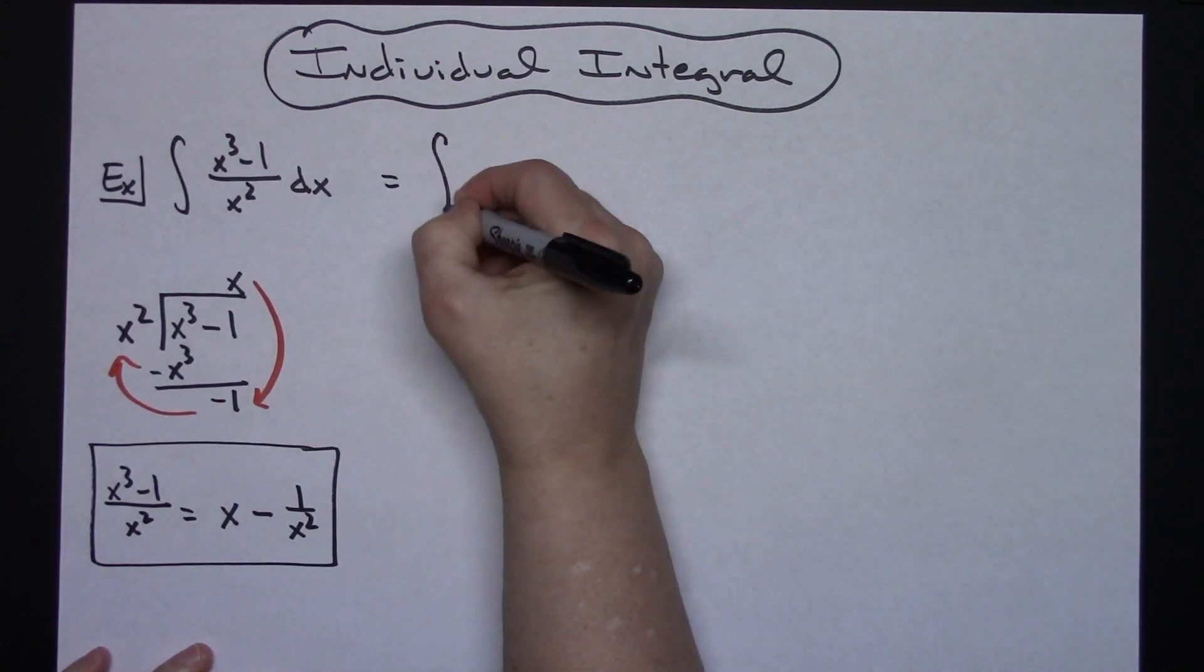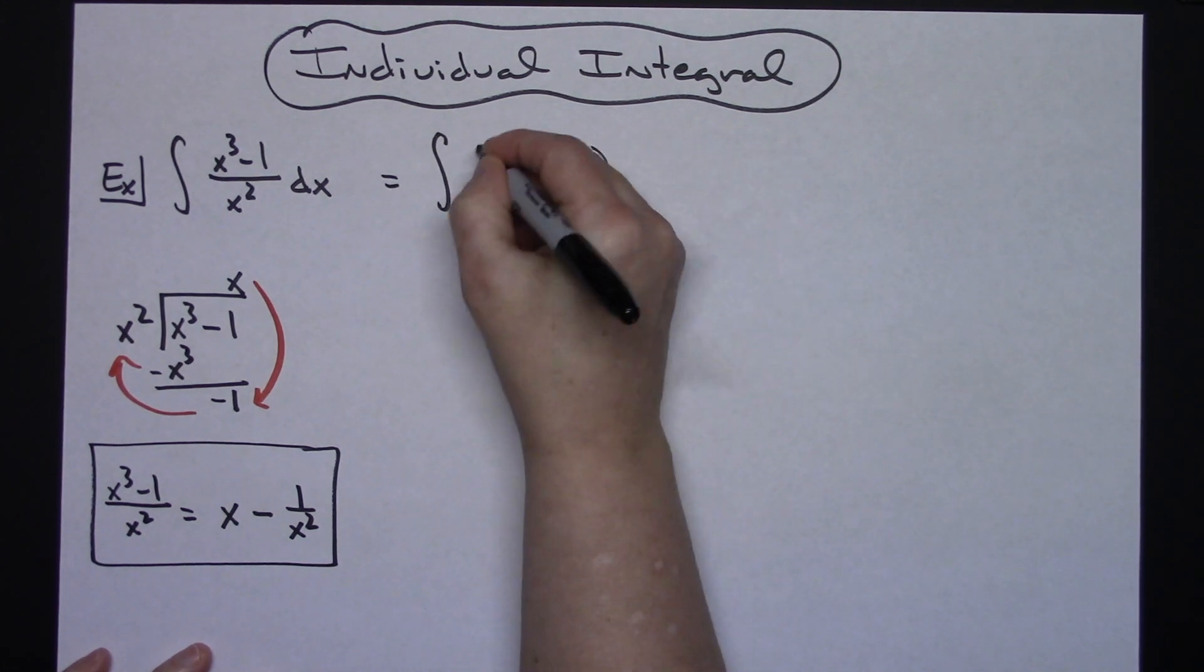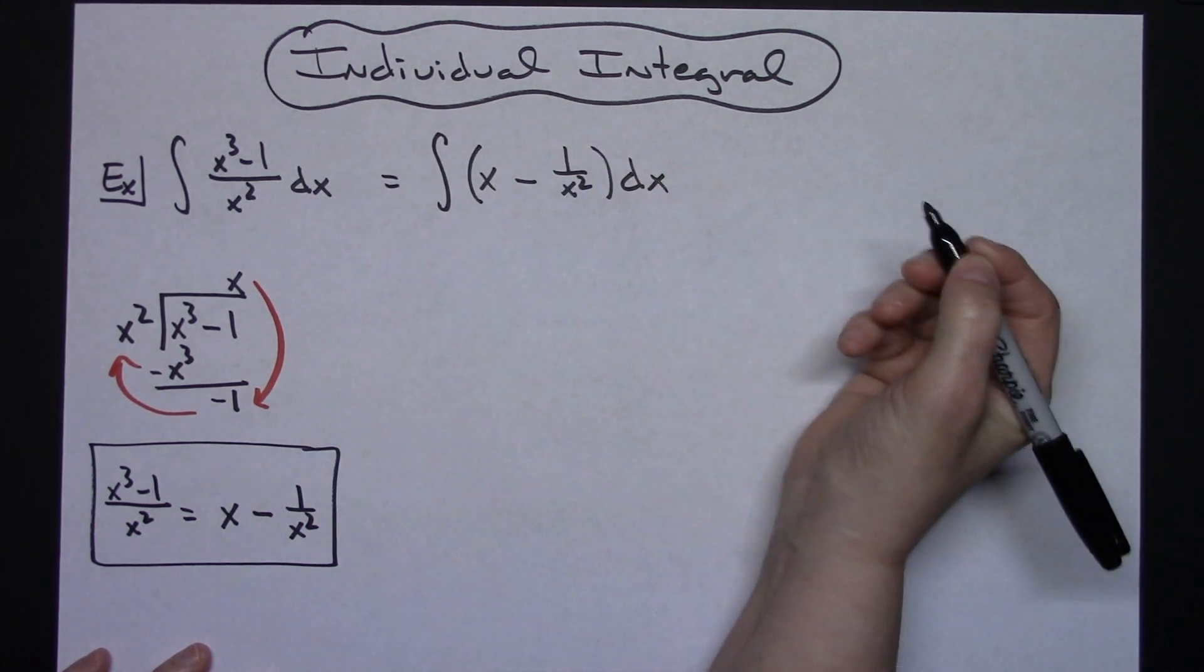So I'm going to have the integral of x minus 1 over x squared dx.